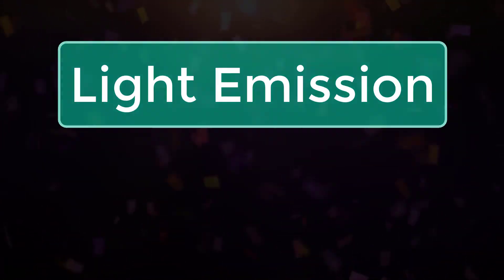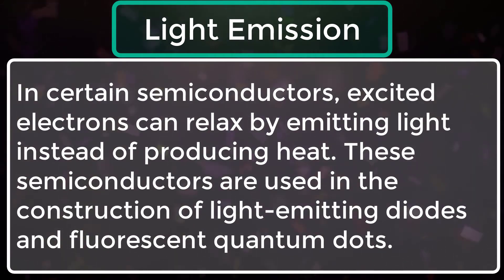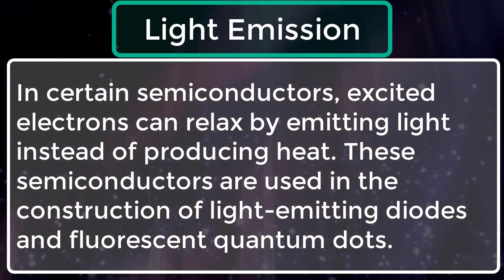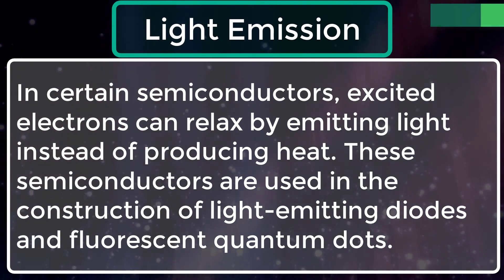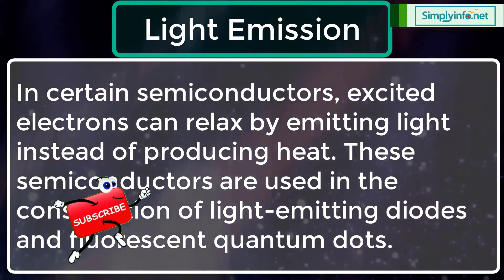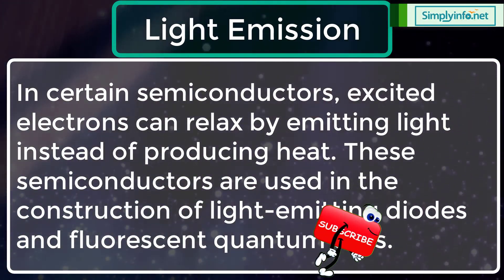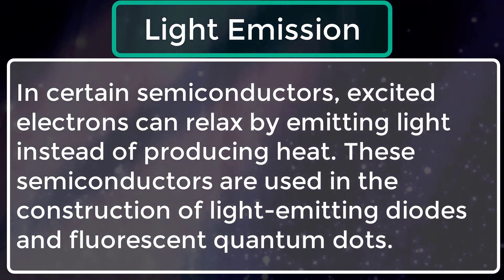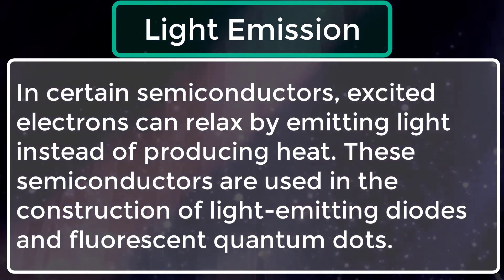In the property of light emission, in certain semiconductors, excited electrons can relax by emitting light instead of producing heat. These semiconductors are used in the construction of light-emitting diodes and fluorescent quantum dots.